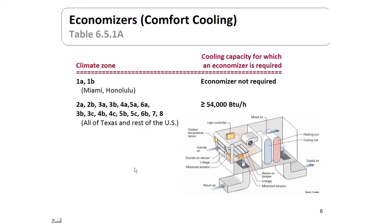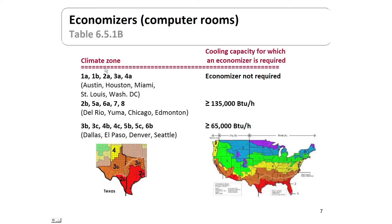Here is an illustration of the economizer cycle type of cooling, showing where it is required and where it is not. It is not required at all in climate zones 1A and 1B — that only includes Miami and Honolulu. The areas where it could be required include all of Texas and the rest of the United States. These climate zones do require economizer cooling if your system is greater than 54,000 BTUs per hour. For computer rooms, the economizer requirement is less stringent and is exempted in climate zones 1A, 1B, 2A, 3A, and 4A — which includes Austin and Houston in the state of Texas.